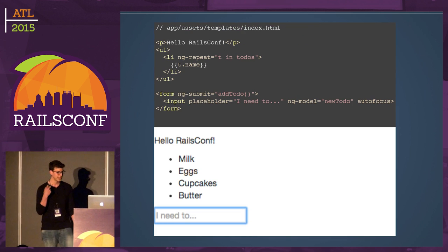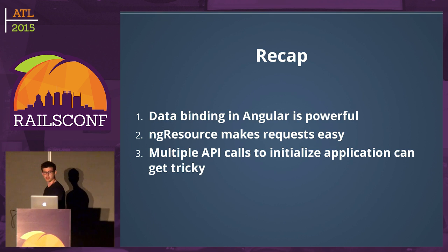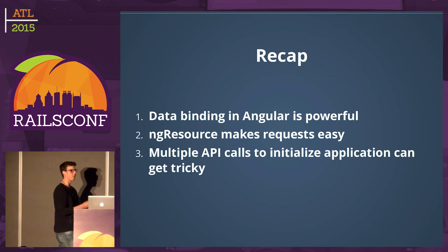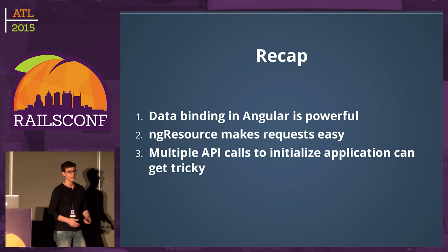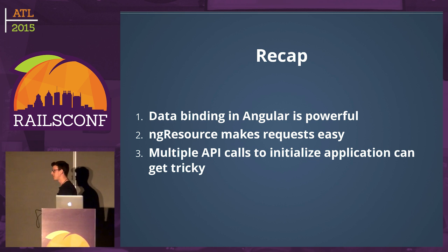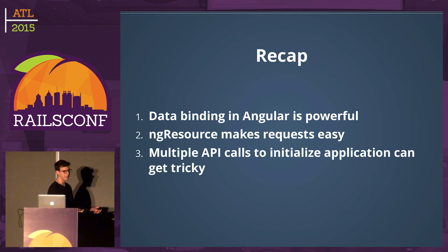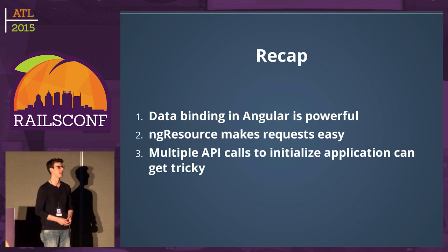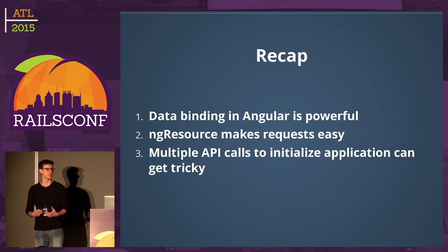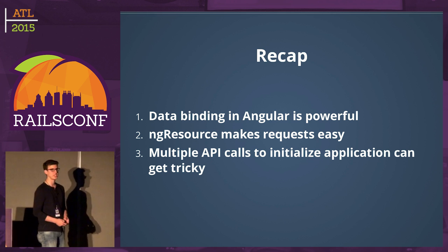To recap Angular: two-way data binding is very powerful — no view glue code needed. If you're using Angular, highly recommend ngResource or a Rails-specific wrapper around it to make requests easy. But here's the key problem: multiple API calls to initialize your application get really tricky. This is the pattern we need to solve — to make the initialization experience better for users.